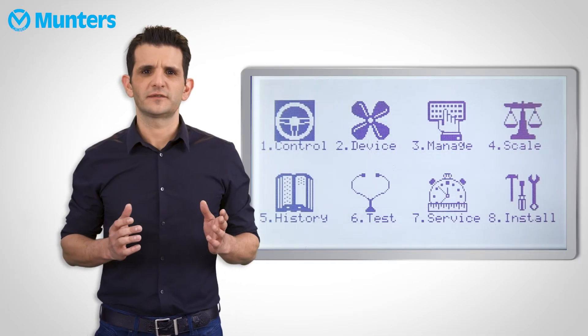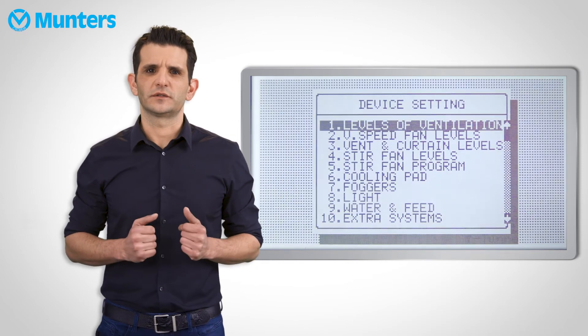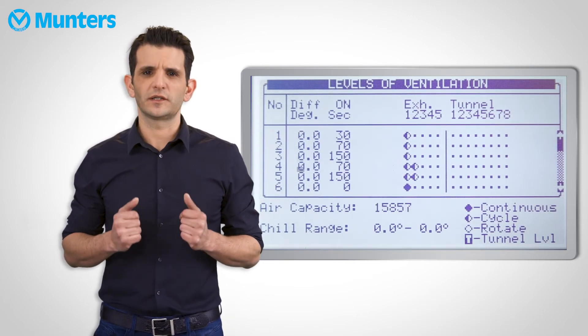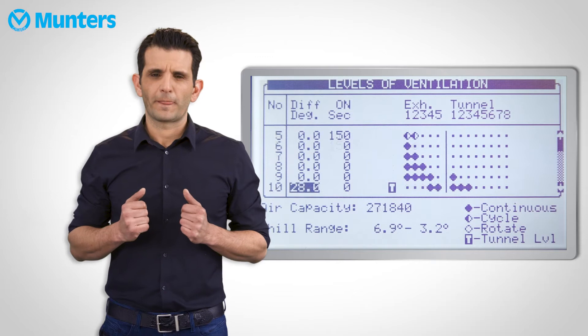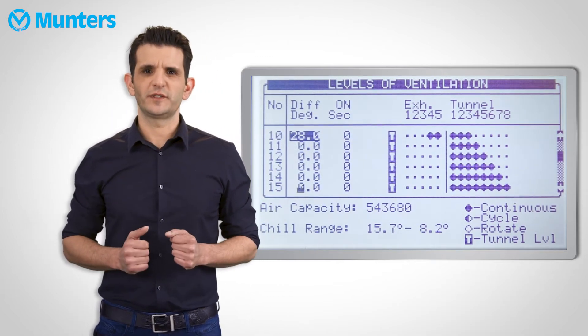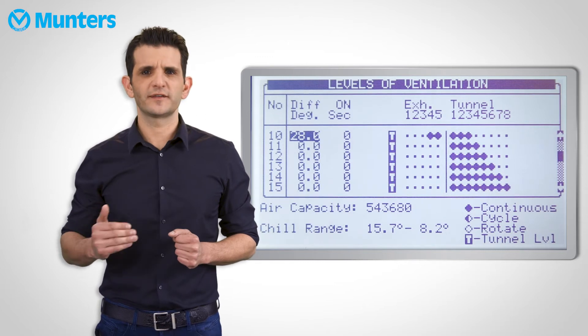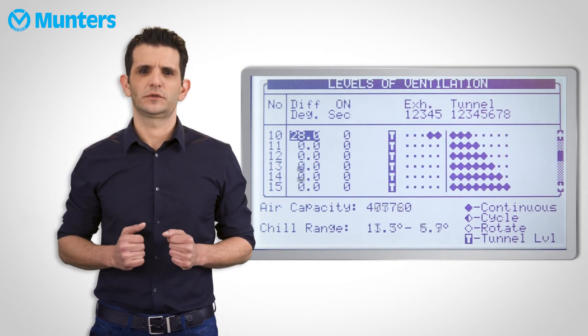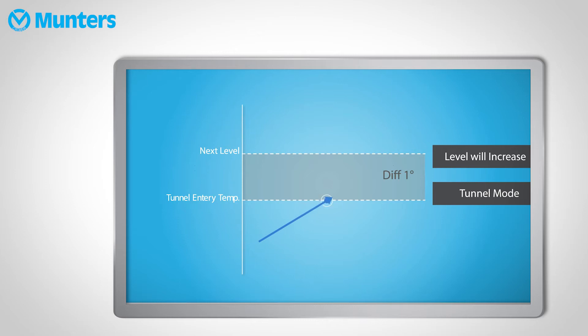Navigate to Device and then Levels of Ventilation and scroll to the tunnel levels. Here you can see that all the differentials are set to zero, which means that the levels would continue to rise even though the birds are getting cooler. If you set a one degree differential in this level, the controller would only increase to this level at tunnel temperature plus one degree. For example, if the controller shows 28 degrees, the birds feel 27 degrees.